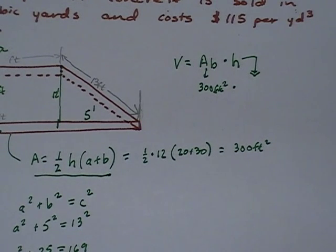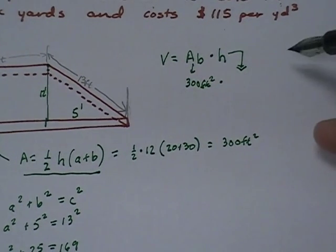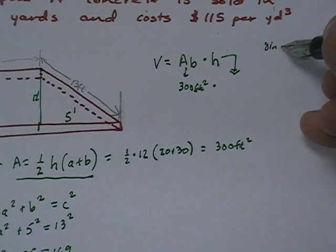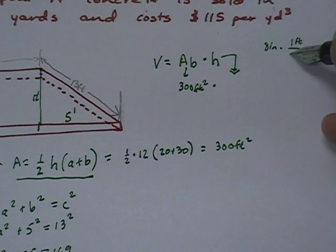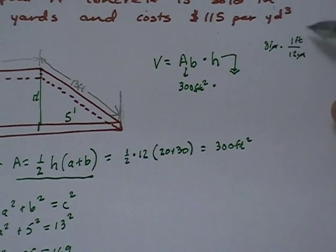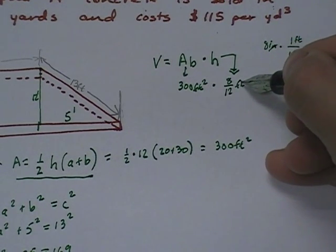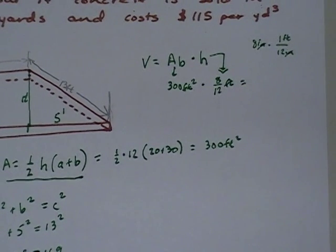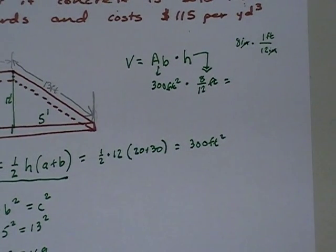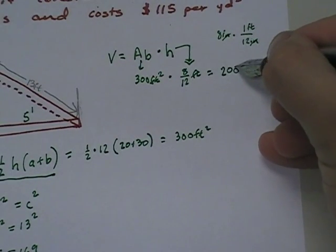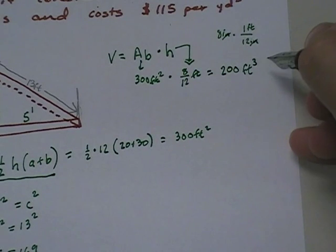I need to convert my inches into feet. So kind of off to the side somewhere, I say, I've got 8 inches times what? 1 foot, 12 inches. And what do we get? We get 8 twelfths of a foot. So I'm going to say 8 twelfths of a foot. And when I say 300 times 8 twelfths, I end up with 200 cubic feet.